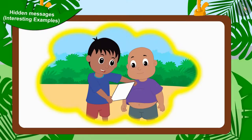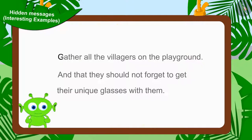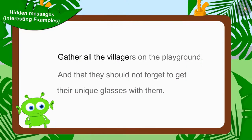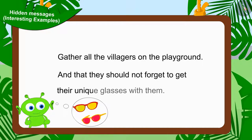Jeev has informed Raju and Bablu through a letter to gather all the villagers on the playground, and that they should not forget to get their unique glasses with them.